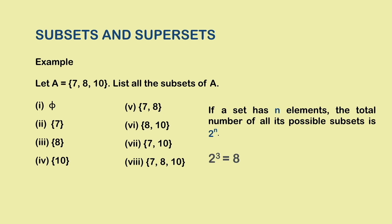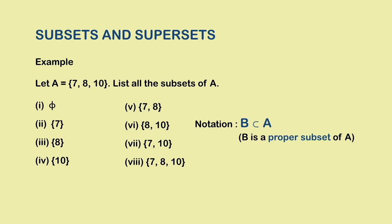Now, something else you should know. All the subsets of any set, other than the set itself, are known as proper subsets of that set. You can see the notation for proper subsets in bold. So, here, all the subsets on the list except the last one, that is the set A itself, are proper subsets of A.